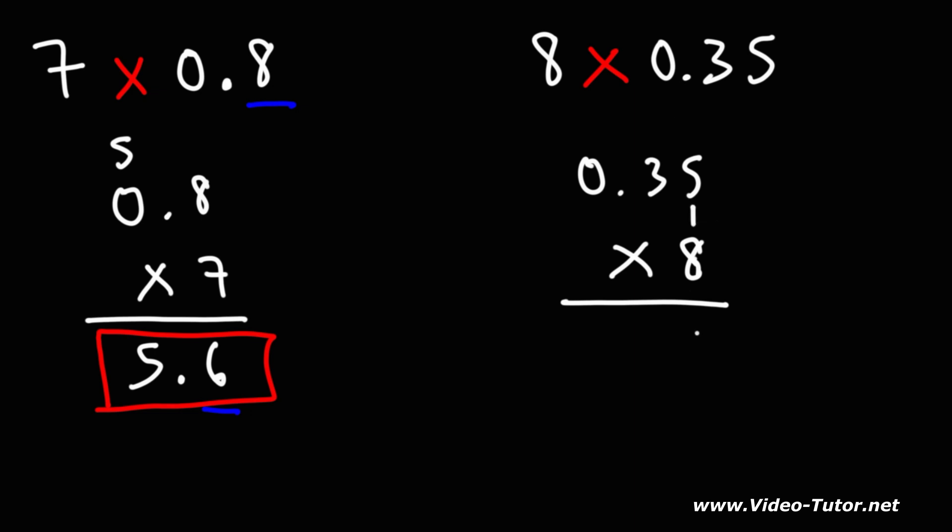8 times 5 is 40. So I'm going to write the 0, carry over the 4. And then 8 times 3 is 24 plus 4. That's 28. I'm going to write the 8, carry over the 2. 8 times 0 is 0 plus 2. That's going to be 2.